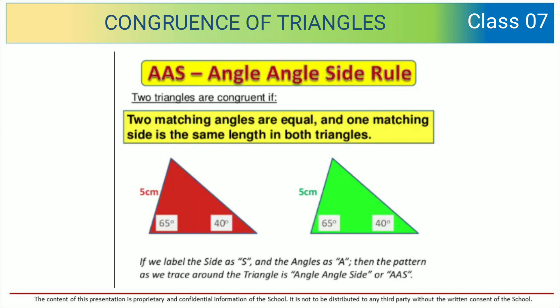Now let us see what is AAS. Two triangles are congruent if two matching angles are equal and one matching side is the same length in both triangles. So 65 degrees, 40 degrees, and 5 centimeters is given. Here, two angles are given and one side is given.